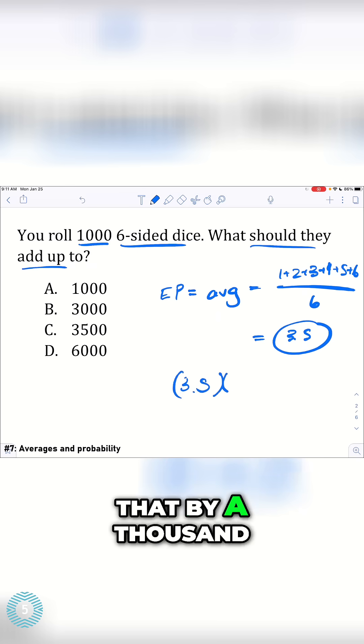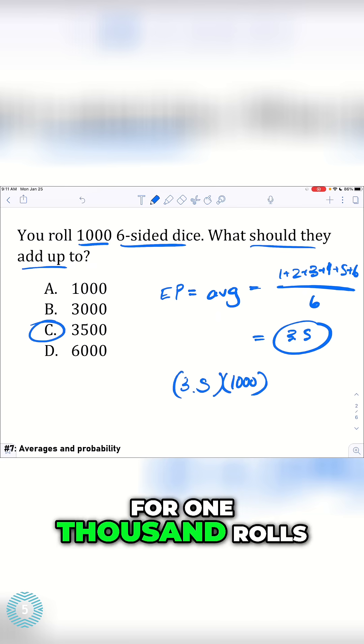Just so you know how that works. So if this is what I get for one roll, I can just multiply that by 1,000, and I end up getting 3,500 for 1,000 rolls. It's as simple as that.